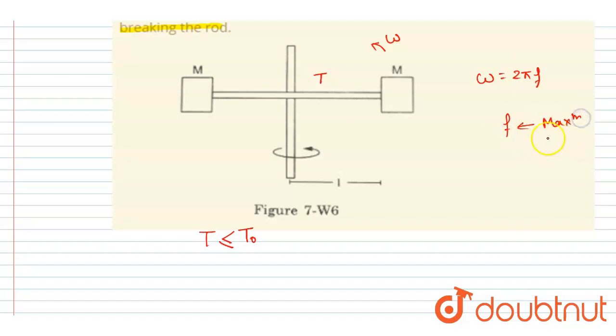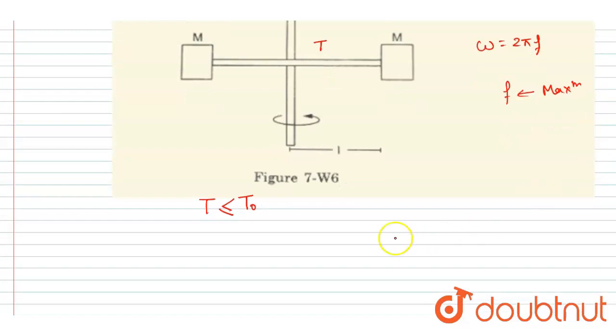What can be the maximum value of this f? If you see here, the tension force is acting as the centripetal force. So I will write T is equals to m omega square into l, where l is this distance. Omega is 2 pi f, so just put the value.